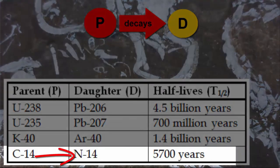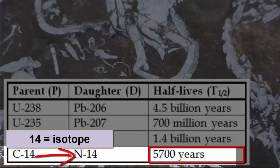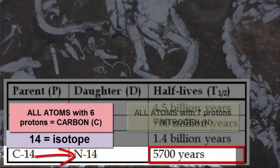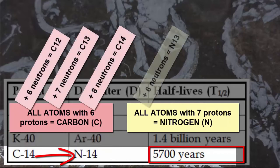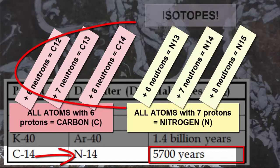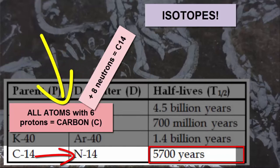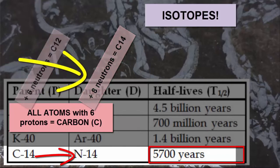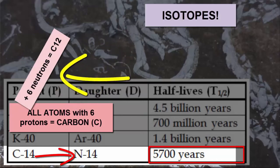For example, carbon-14 decays to nitrogen-14 with a half-life of 5,700 years. The numbers 14 indicate a particular isotope of these atoms. All atoms with six protons are carbon atoms, and all nitrogen atoms have seven protons. However, each atom can have varying amounts of neutrons, and we call all those permutations — the same atom but different numbers of neutrons — isotopes. Carbon-14 is a carbon isotope with six protons and eight neutrons, total 14. Carbon-12 is a carbon isotope with six protons and six neutrons, total 12.